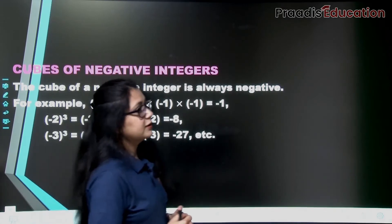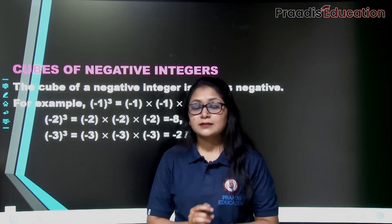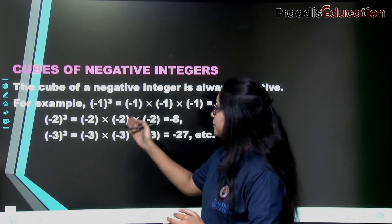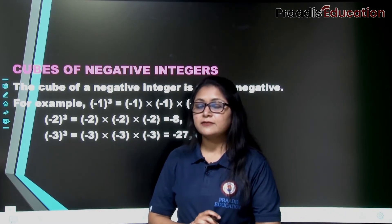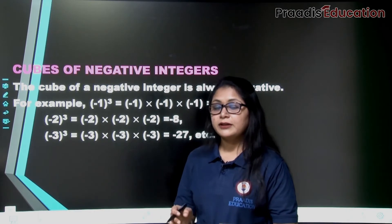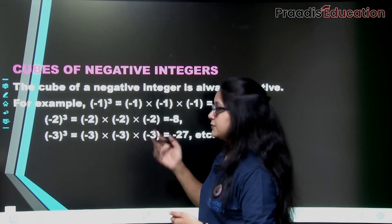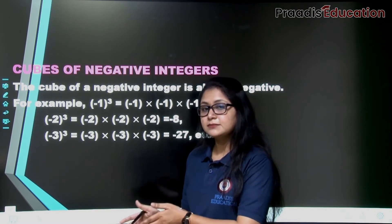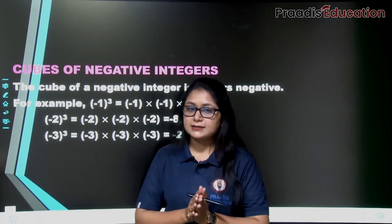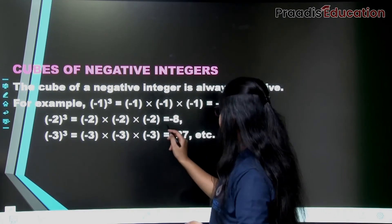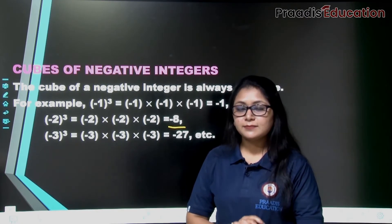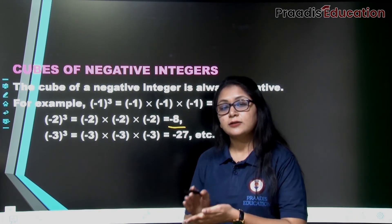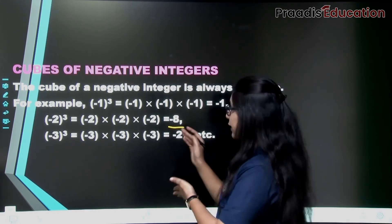Let's see a few more examples. Here we take -2 and -3. To find the cube of -2, we multiply -2 three times: (-2) × (-2) × (-2) = -8. We know that 2 × 2 × 2 = 8, and since we have an odd number of negative terms, we get a negative sign in the answer. This is why the product is -8. So when we find the cube of a negative integer, the cube is also negative.